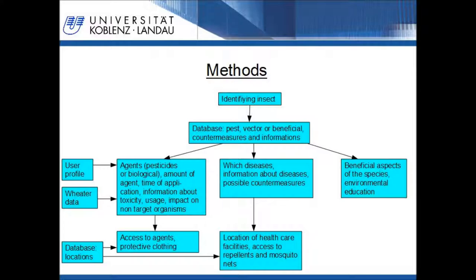On this slide, a scheme of such a system is shown. First, the insect is identified. In the next step, the user gets information about the insect, e.g. if it's a pest or a vector. This information is stored in a database. If the insect is a pest, the user gets information about possible agents or methods to fight the pest. This advice can be tailored to the user — for example, for a farmer with biological farming management, it is inappropriate to give the advice to use a pesticide. It might also be useful for the farmer to have information about the application amount, the best time point, and hazards to non-target organisms like humans or beneficials.